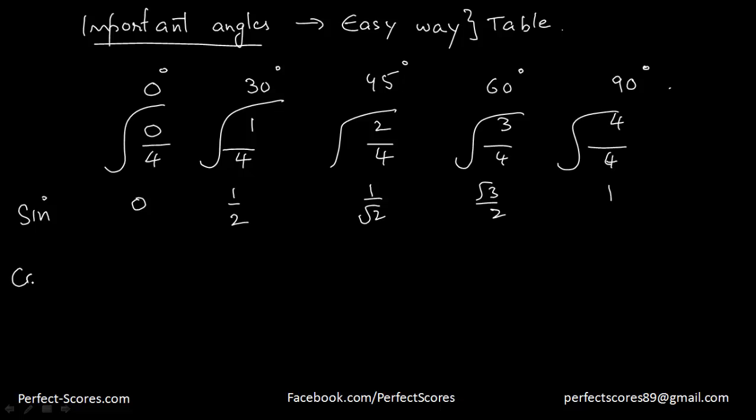And cosine is actually the reciprocal, the inverse of sine. So this one is going to be written here, this root 3 by 2 is going to be written here, this 1 by root 2 would be written here. So cosine of 0 is 1, cosine of 30 degrees is root 3 by 2, cosine of 45 degrees is 1 by root 2, cosine of 60 is 1 by 2, and cosine of 90 is 0.